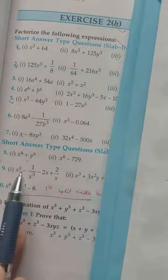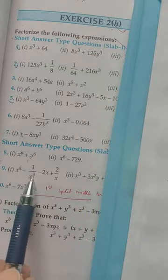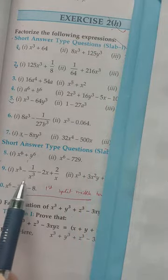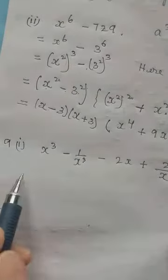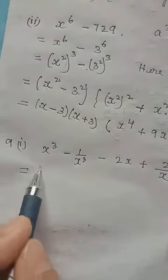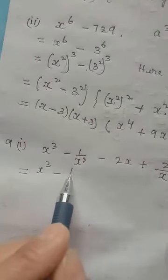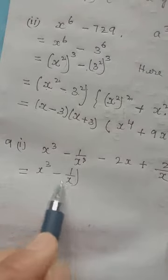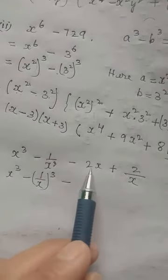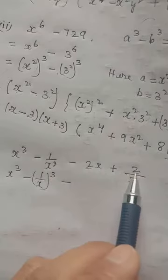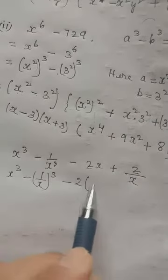Here we also have to factorize. You can see power cube and power cube, so this part will use a formula, and the other part we don't have a formula for, so we simply have to take a common factor. The aim is to factorize. We can clearly see we can apply the formula a³ minus b³, because one term we can make a cube — no problem.